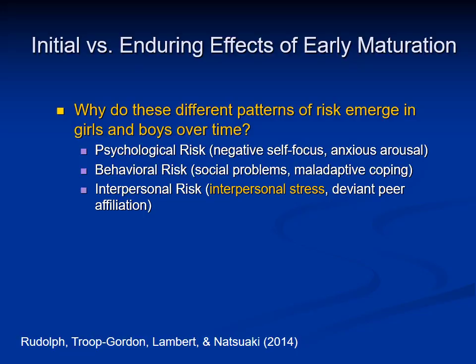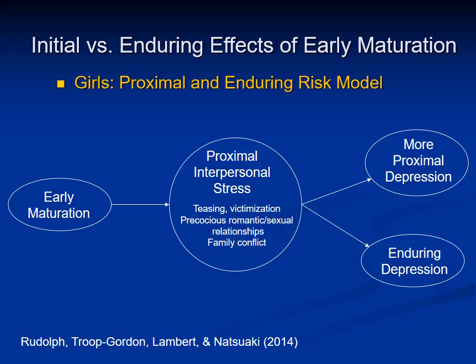We were then interested in what processes might explain these different patterns in girls and boys. We looked at interpersonal stress as one factor. We thought that girls might follow what I'll call a proximal and enduring risk model: early maturation in girls is associated with teasing and more victimization, precocious dating and romantic relationships, and more family conflict. We assumed that this interpersonal stress would result in depression right away, and once girls are launched onto this trajectory of risk, the negative consequences may continue to propel them along this path, maintaining depression over time.